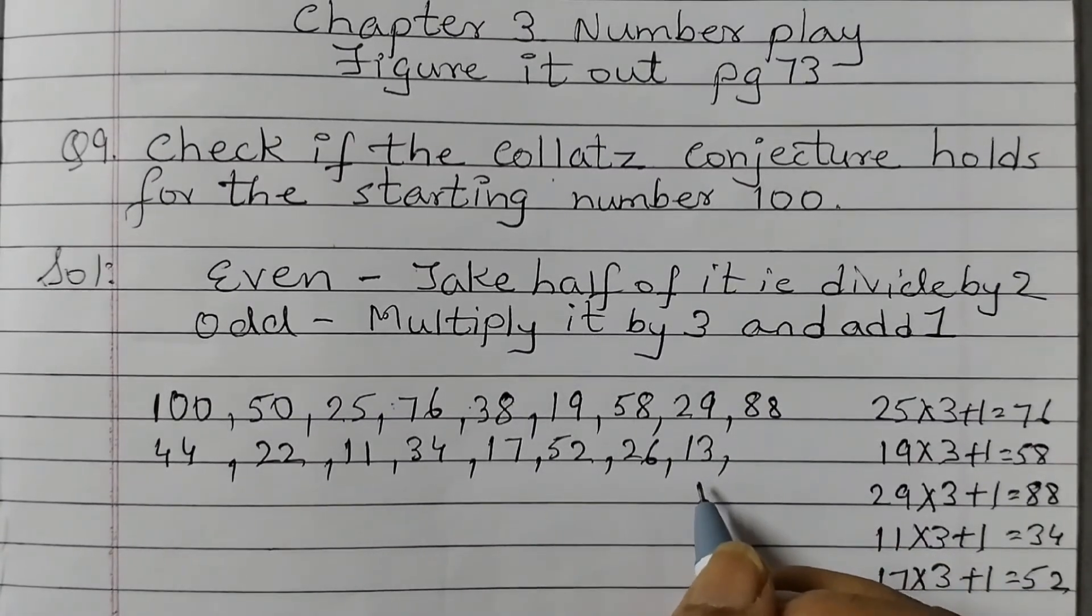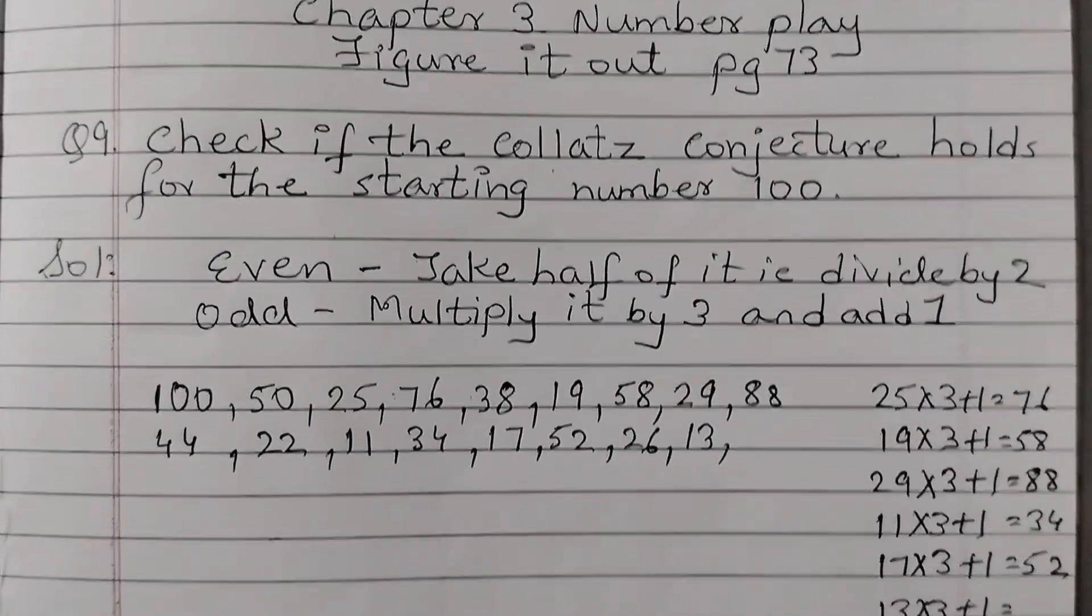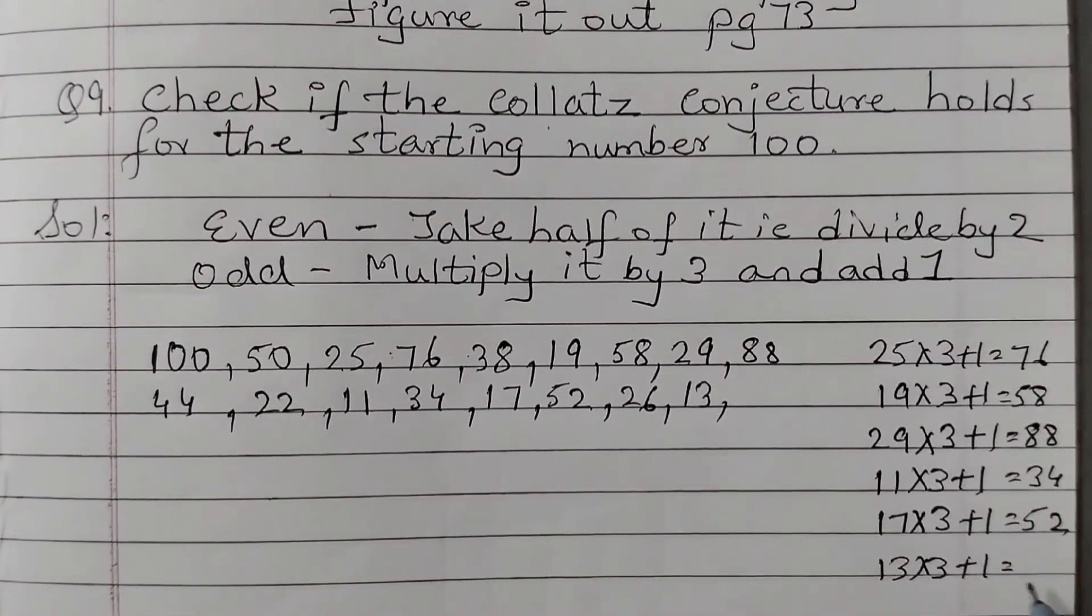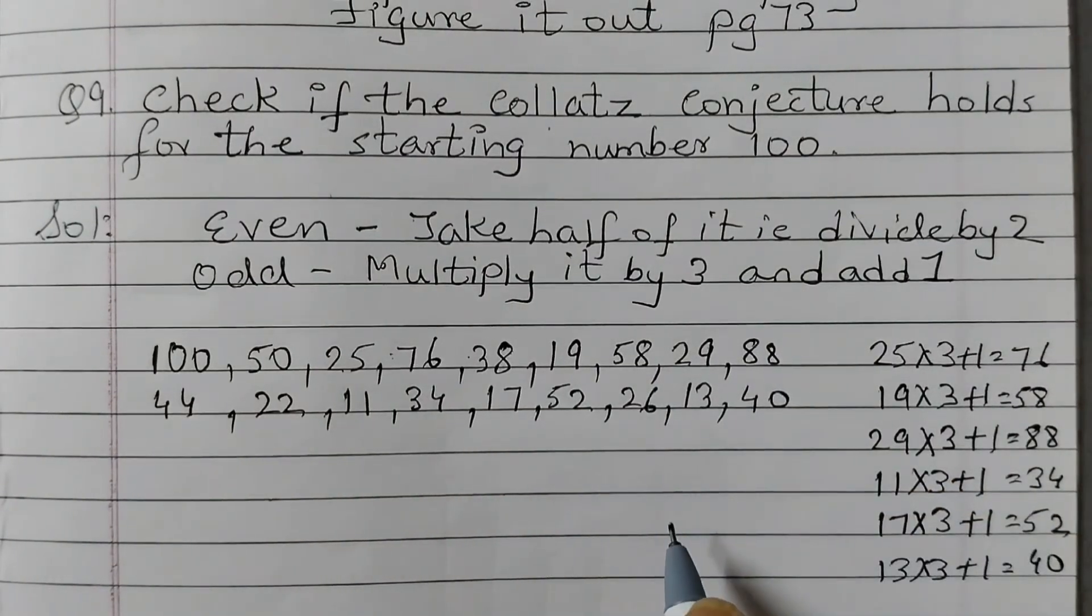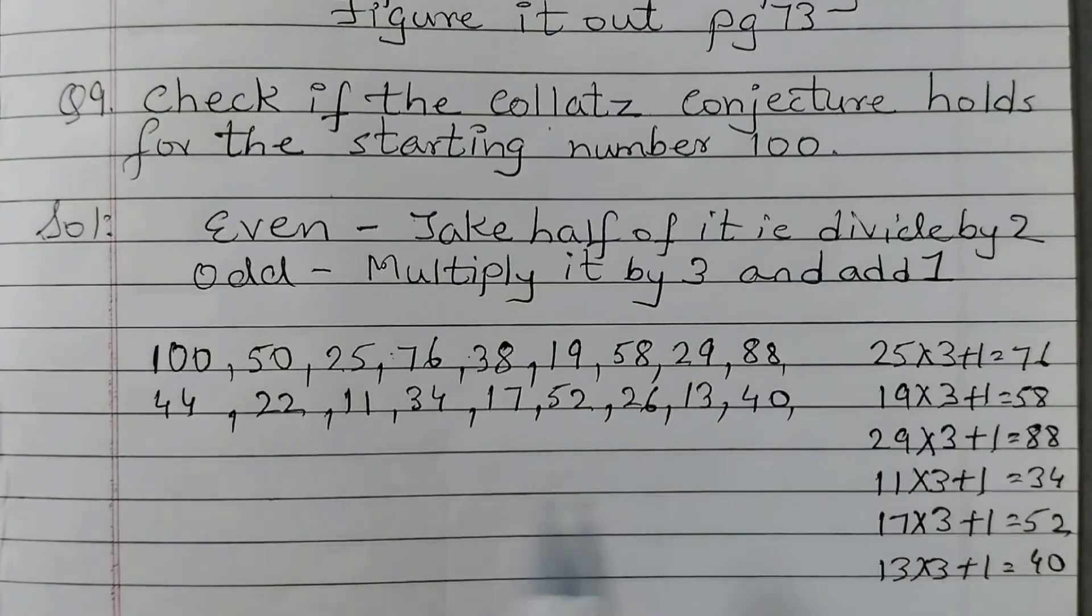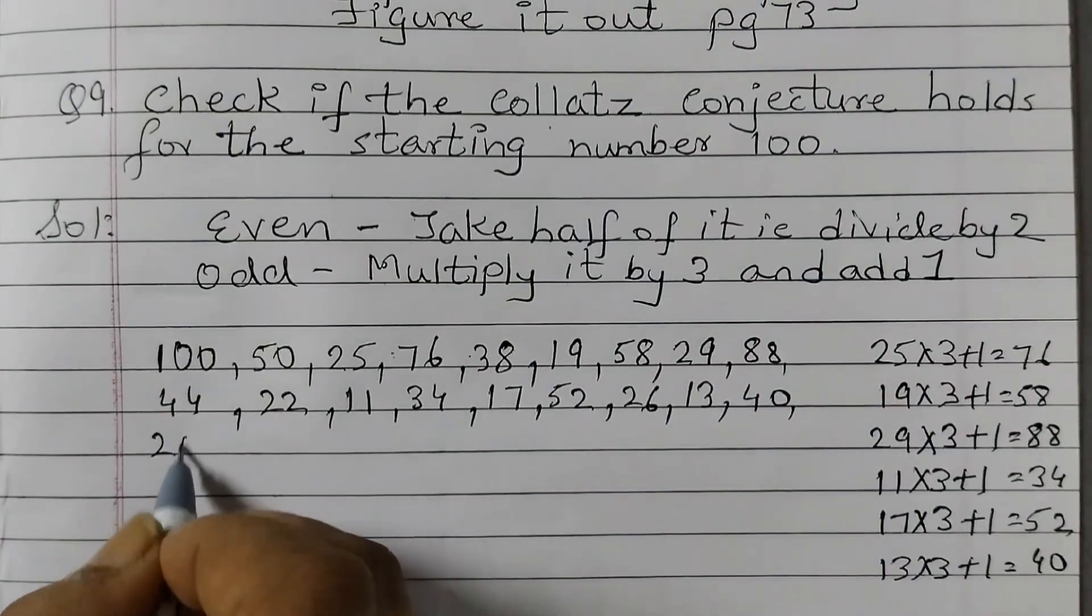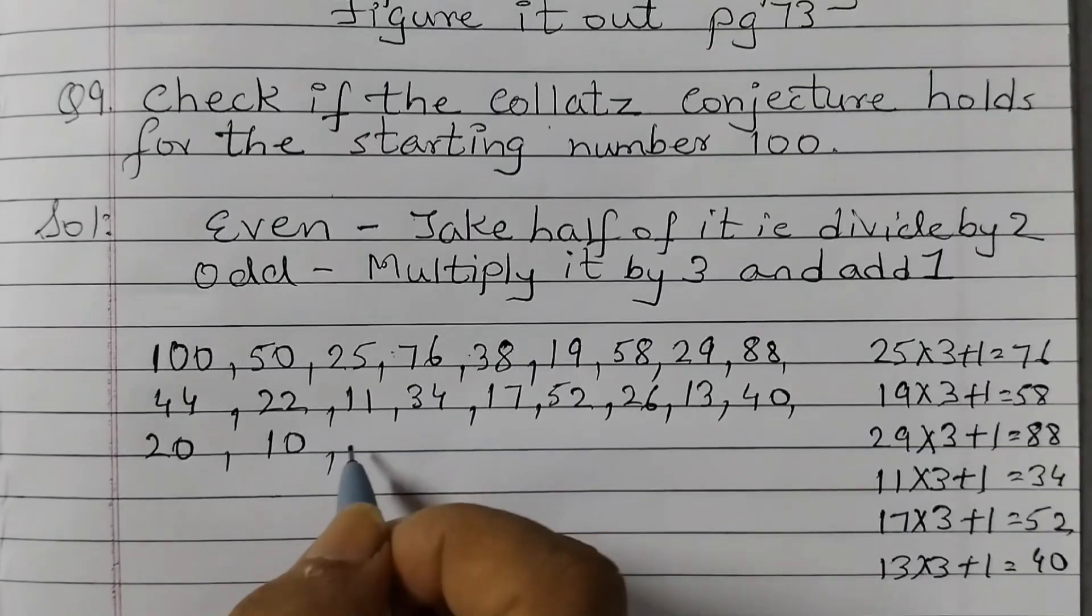Odd number, 13 into 3 plus 1. So that's 39 plus 1, 40. We need to go on doing this till we reach 1. 40 even number half of 40 is 20. Half of 20 is 10. Half of 10 is 5.